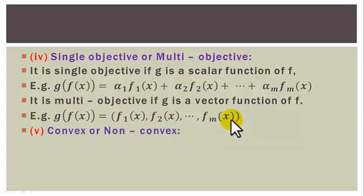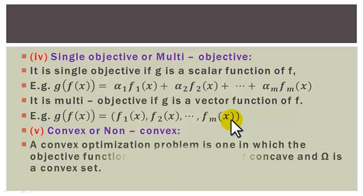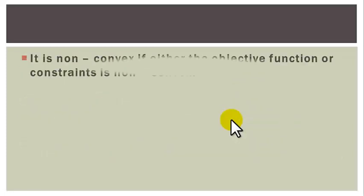Five: we also classify optimization problems as convex or non-convex. A convex optimization problem is one in which the objective function or objective functions is either convex or concave, and omega, that is the domain, is a convex set. It is non-convex if either the objective function or the constraint is non-convex.